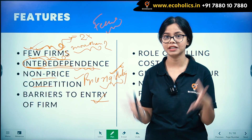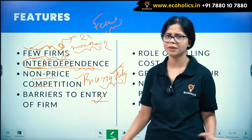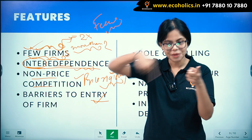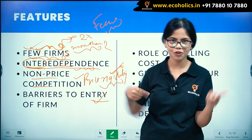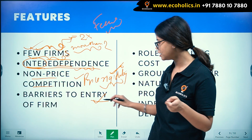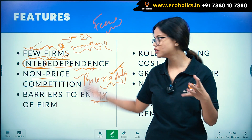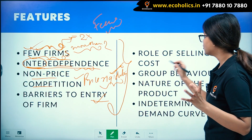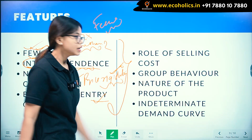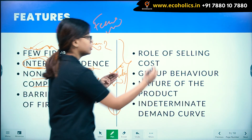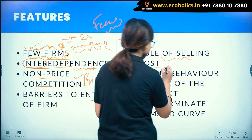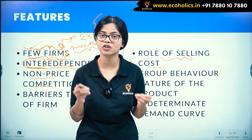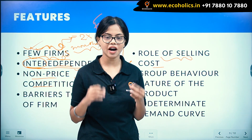Those firms who are able to cross this set of instructions and rules are the only ones who get entry to this market. Now let's understand the role of selling cost. Selling cost and selling techniques — advertisements — all these things play a major role here.